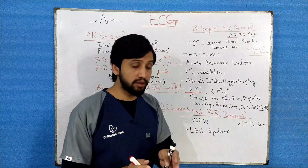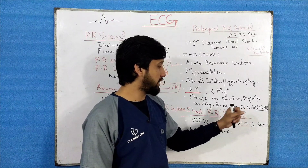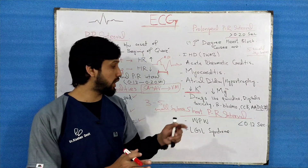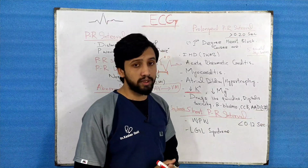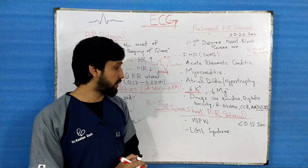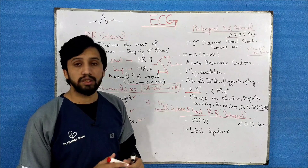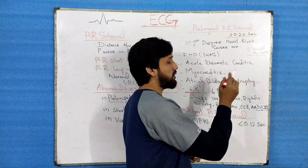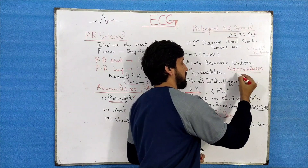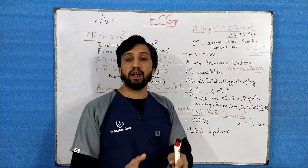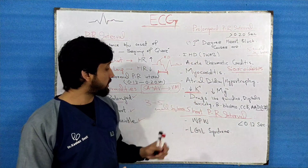Drugs such as quinidine and digitalis toxicity can cause prolonged PR interval, as can beta blockers and calcium channel blockers, which are both AV nodal blocking agents. Class 3 anti-arrhythmic drugs also prolong the PR interval. Another cause is sarcoidosis, where accumulation of non-caseous granuloma within the internodal fibers leads to a prolonged PR interval.